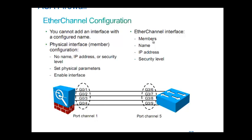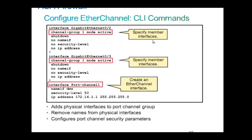Usually when you create a port channel, you assign it to the physical interface. But here in ASA, you assign the physical interface to the port channel interface. Let's see the configuration: you create the port channel interface, call it 'interface port-channel 1', give a name, give security level, give IP address. Then you call the channel group under the physical interface.